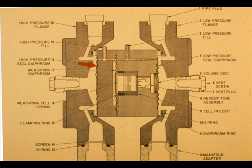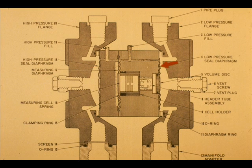The principle of operation of the 56DP transmitter is as follows. The high-pressure measurement enters the high-pressure manifold connection and is applied to the high-pressure seal diaphragm, 18. The low-pressure measurement enters the low-pressure manifold connection and is applied to the low-pressure seal diaphragm, 4.